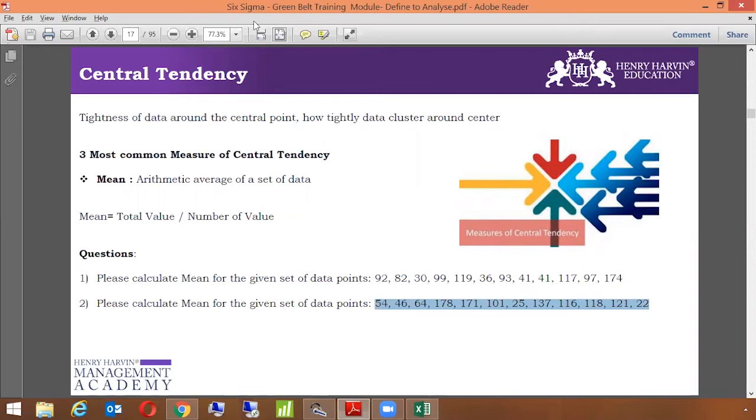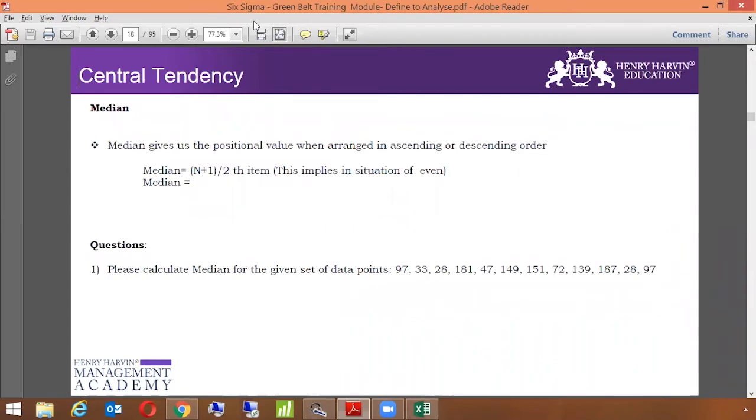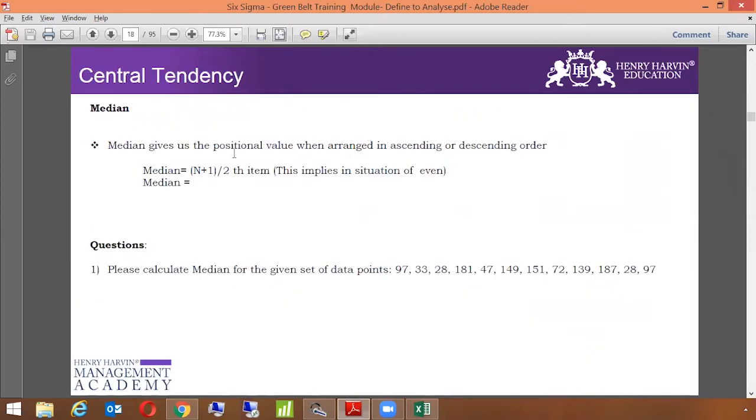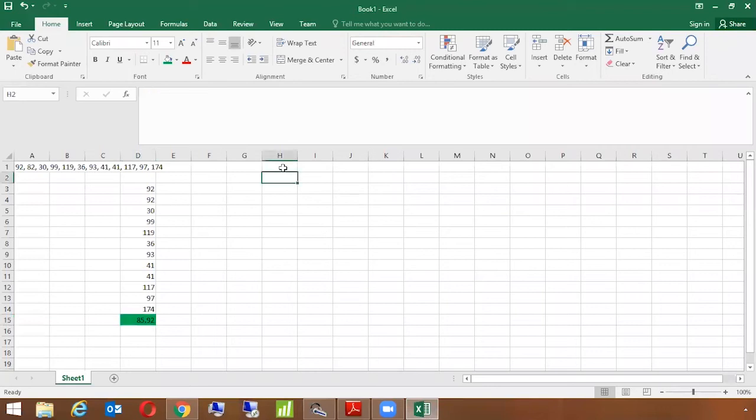The second thing in central tendency is called median. Median gives us the positional value when we arrange the data in descending or ascending order. This can be calculated in Excel and manually also. Let me do a demonstration so we can understand better. I'm copying these values and pasting them here. There's a condition that it has to be arranged in order, either ascending or descending. We'll do it in descending order.